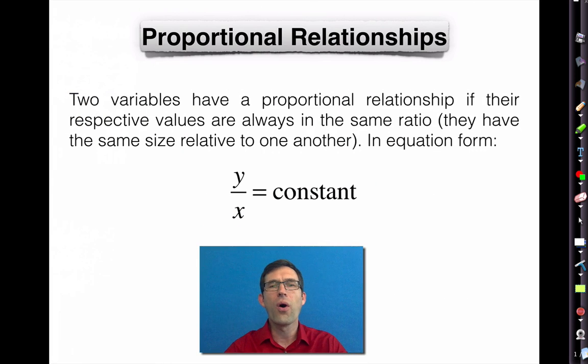Let's get into it. The basis of all linear relationships, relationships that when graphed look like lines, are what are known as proportional relationships. Proportional relationships are things that you've been working with since 6th grade, so hopefully this will seem pretty familiar. Let's take a look at the technical definition. Two variables have a proportional relationship if their respective values are always in the same ratio.